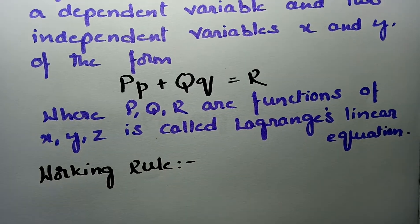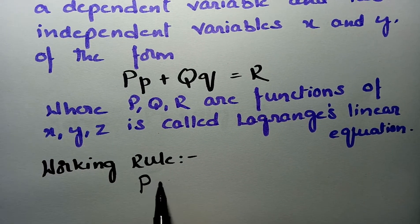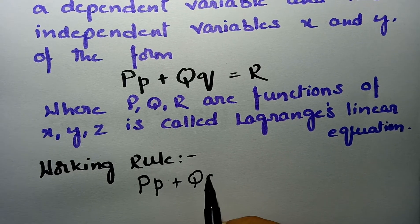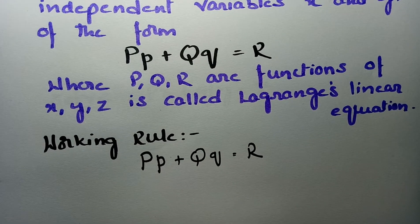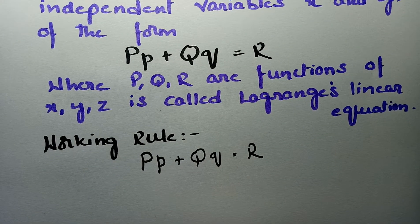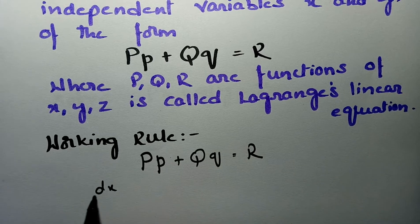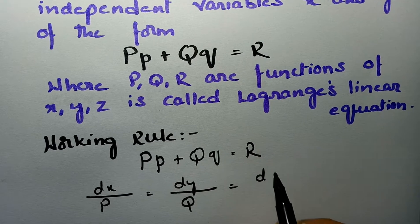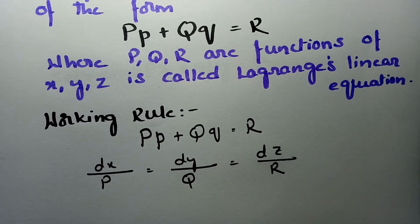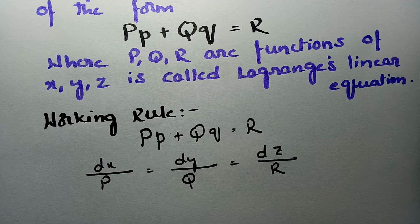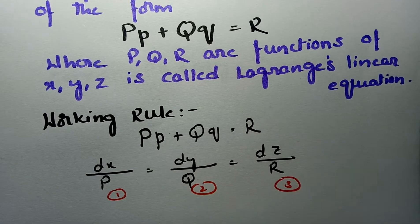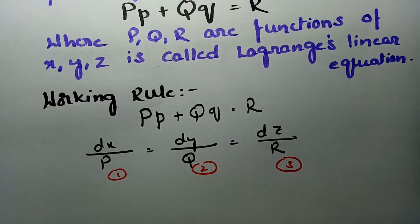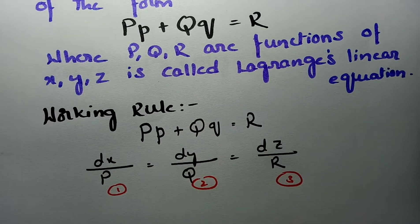So how do we solve this form? If the equation is of the form P·p + Q·q = R, we have to transform it into the auxiliary equation: dx/P = dy/Q = dz/R. We consider these as equations 1, 2, and 3, and in general we equate two equations at a time and solve.